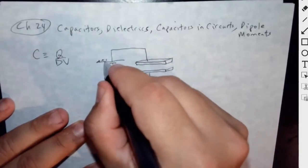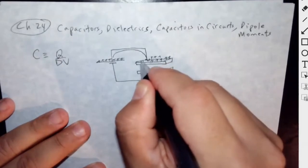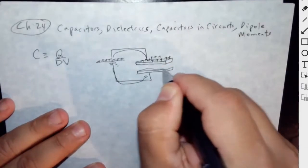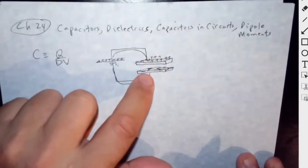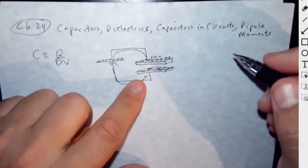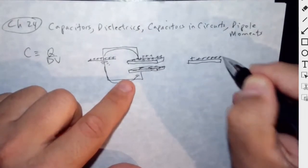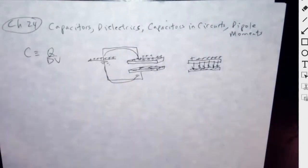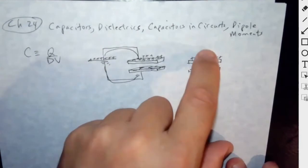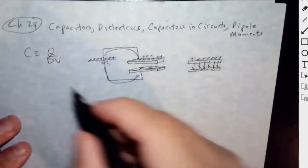The positive terminal of the battery sends positive charge to the positive plate, and then the negative terminal sends negative charge. So you charge this plate positively and this one negatively. It's kind of like the one we saw in the lab, where you have a rod with positive and negative — the electric field is really strong in the middle. You create a situation where the electrical field is very strong between the two plates and weaker outside, so you concentrate and focus the electrical energy between the two plates.